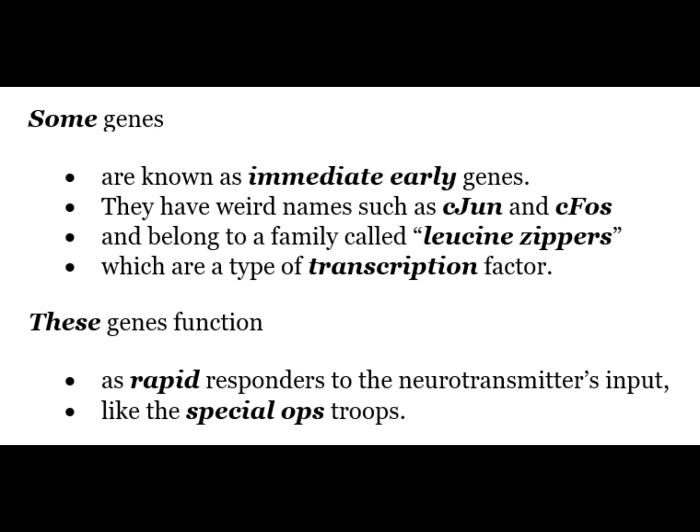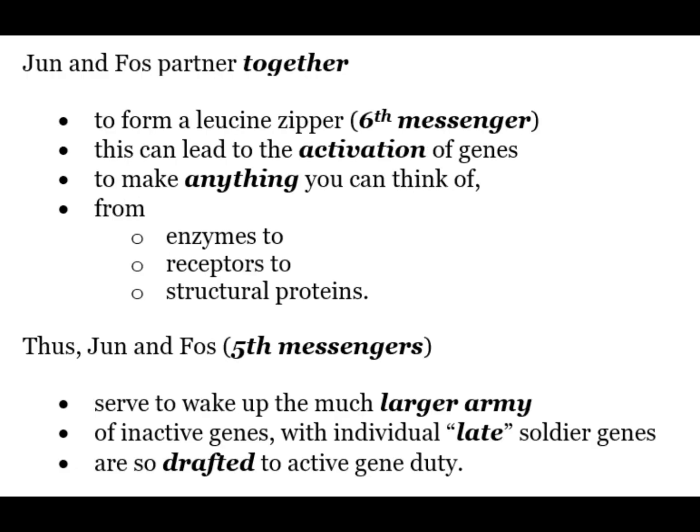These genes function as rapid responders to neurotransmitter input like special ops troops. The fifth messengers Jun and Fos partner together to form a leucine zipper, which is the sixth messenger. This can lead to the activation of genes to make anything from enzymes and receptors to structural proteins. Thus Jun and Fos serve to wake up a much larger army of inactivated genes — individual late soldier genes which can now be drafted into active gene duty.